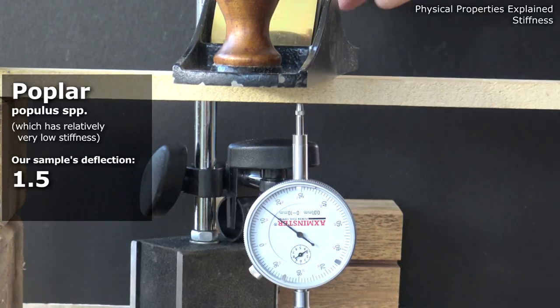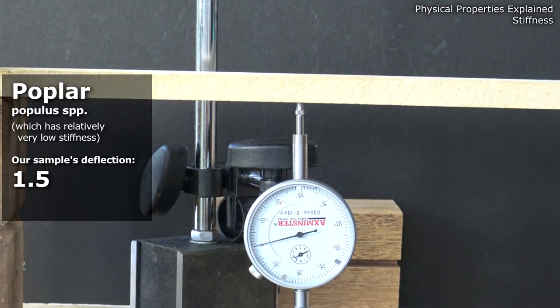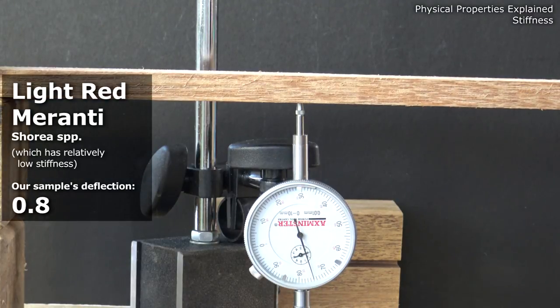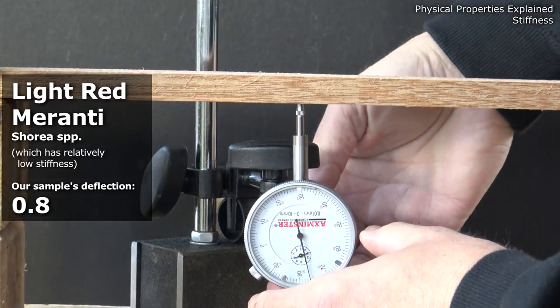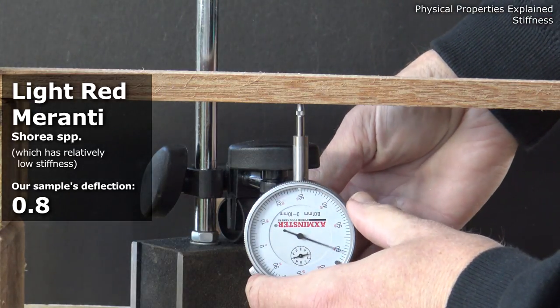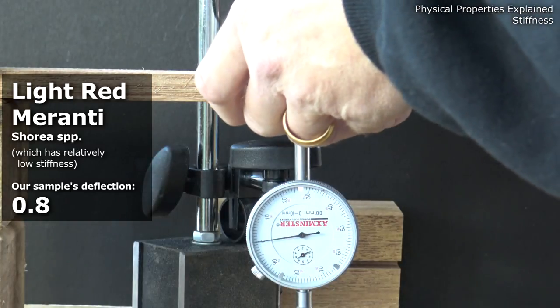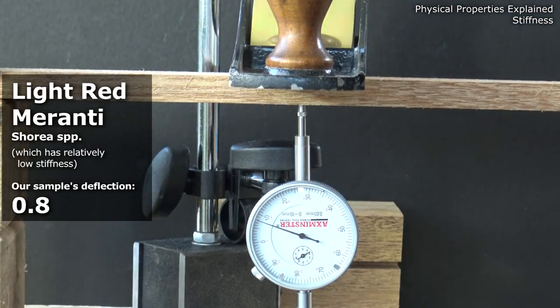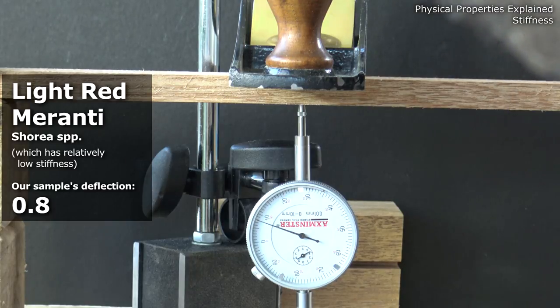If I swap that sample out for something different, this time I've got light red Meranti, I need to reset the indicator to zero. Same weight, and you'll see the deflection is 0.8 of a millimetre.